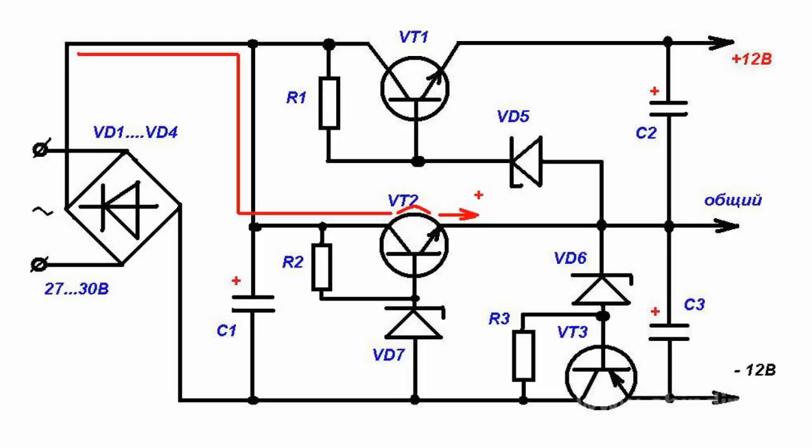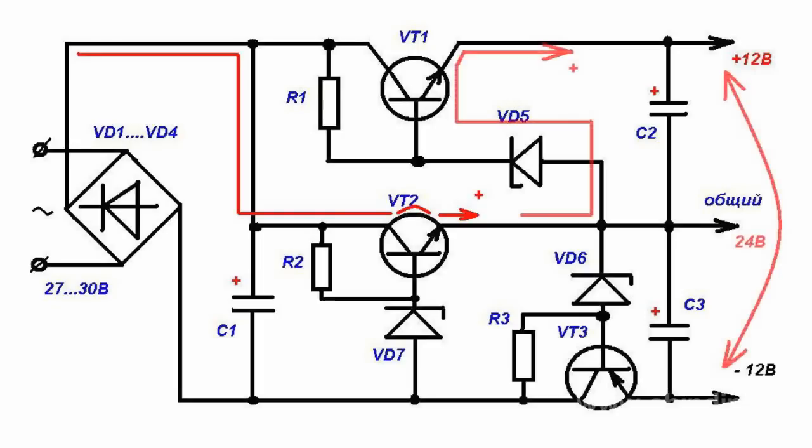Therefore, this voltage is used by transistor BT1, and on its emitter relative to the emitter of transistor BT2, a constant voltage of 12 volts is also received. Relative to the minus, the voltage is 24 volts. Now we have a plus, total, and a minus.